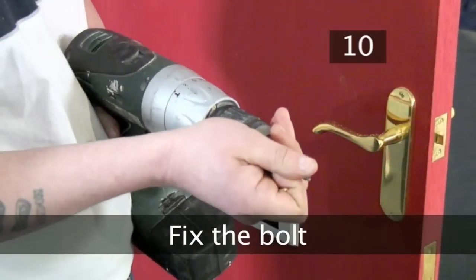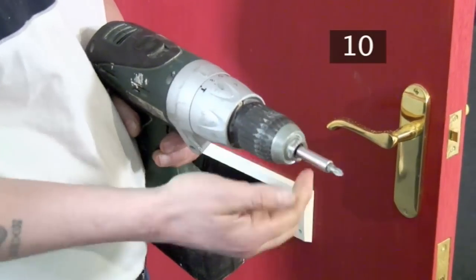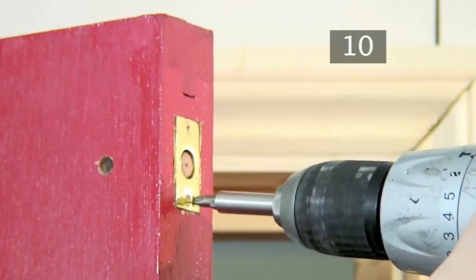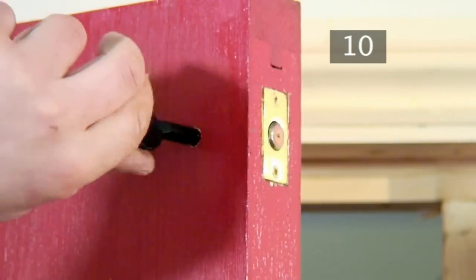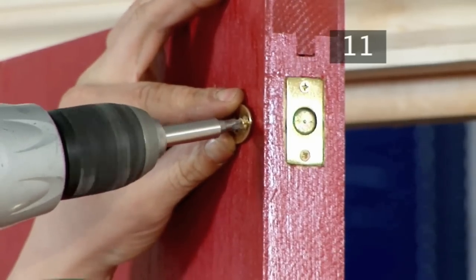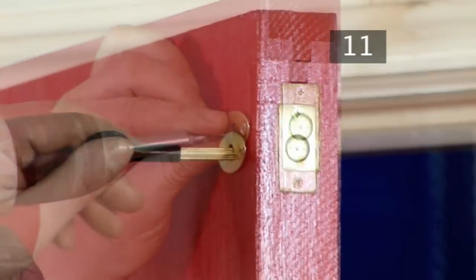Step 10. Fix the bolt. Attach a screw head drill bit and drill the bolt into the door. Now double check that the key still works with the bolt. Step 11. Fit the keyhole plate. Drill in both screws and once again check that the key still works.